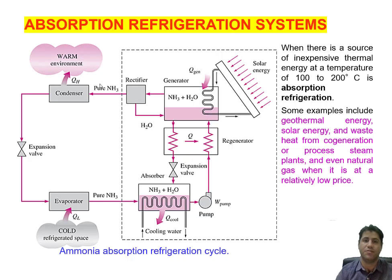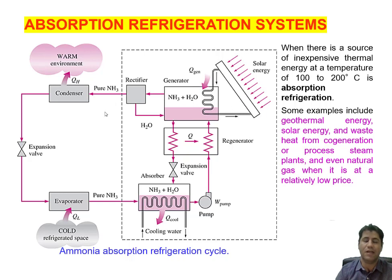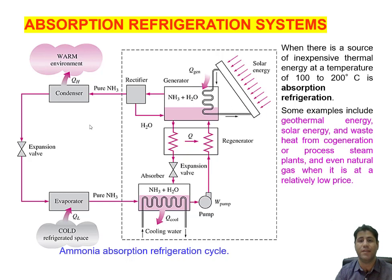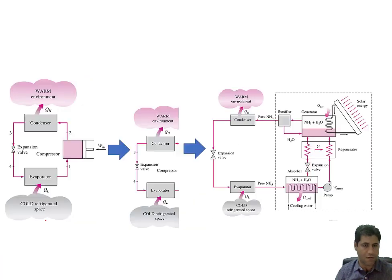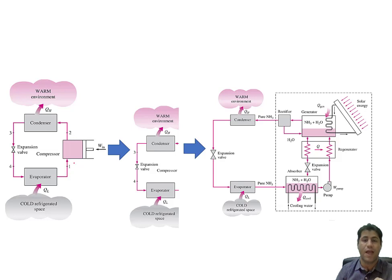The last type of refrigeration cycle I'm going to introduce is the absorption refrigeration system, or ARS. This type of refrigeration is not that much different from vapor compression refrigeration. The difference is how we provide the high-pressure working fluid. In vapor compression, we had a compressor to compress the working fluid and change its phase from gas to liquid.